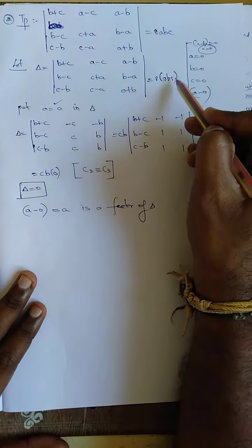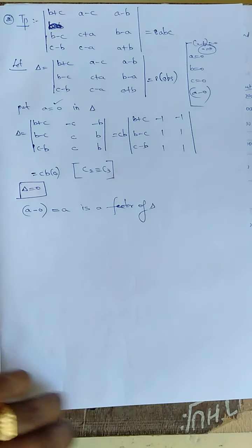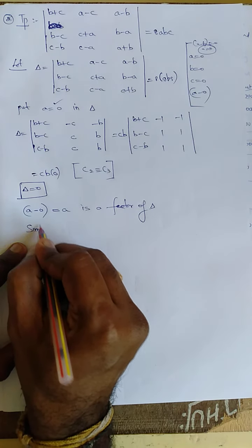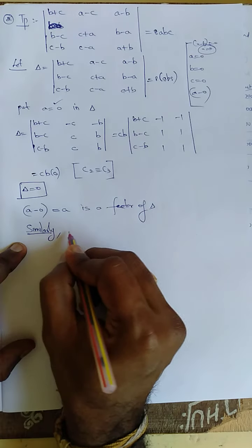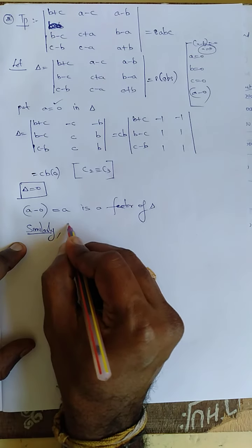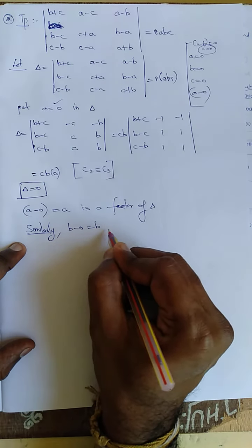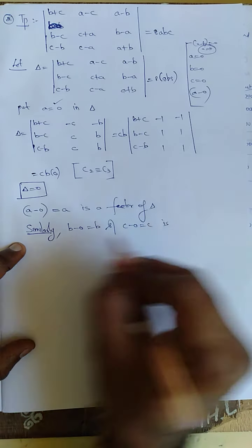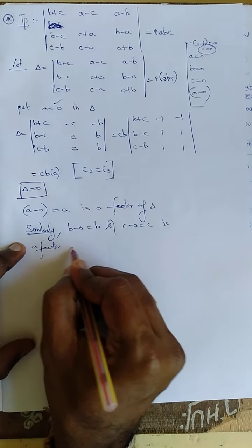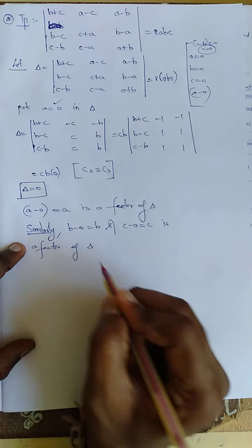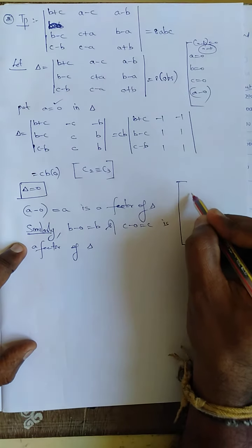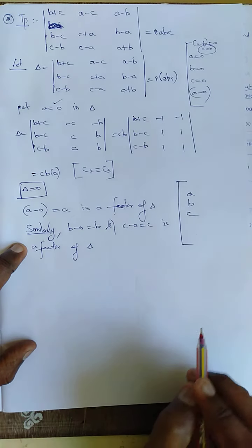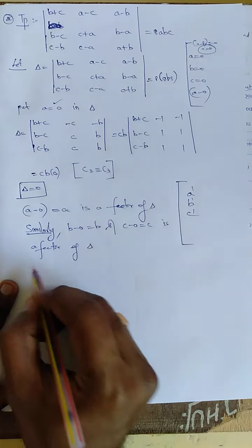If we apply b equal to 0 and c equal to 0, the same procedure happens. Similarly, (b - 0) = b and (c - 0) = c are also factors of del. So in total we have three factors: a, b, and c, all of power 1.